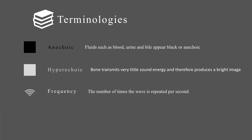Frequency is the number of times the sound wave is repeated per second. We have different probes — high frequency and low frequency — based on this. Gain refers to the overall brightness of the image: when you increase gain it becomes more white, and when you decrease gain it becomes more black.